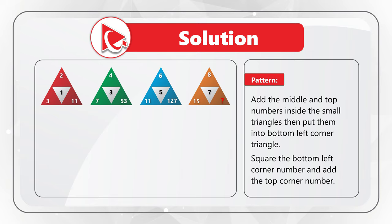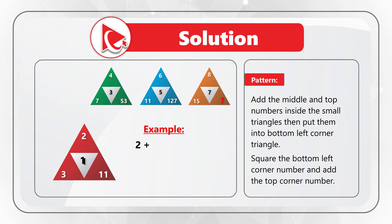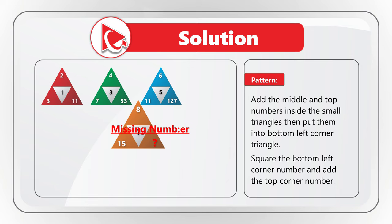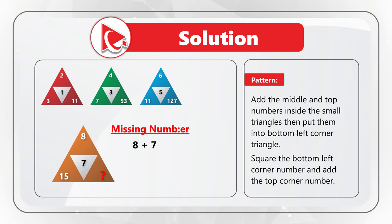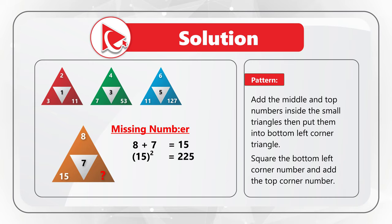In the first triangle: 2 plus 1 equals 3; 3 squared equals 9; and 9 plus 2 equals 11. Armed with this information, let's find the missing number. First, let's add 8 plus 7 (top and middle numbers): 8 plus 7 equals 15, and you can confirm this by looking at 15 in the bottom left corner of the triangle. 15 squared equals 225. Then to find the missing number, we add 8 (the top number) plus 225 (the calculated number), so the final answer is 233.